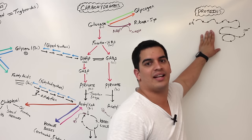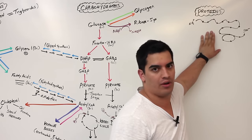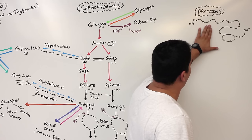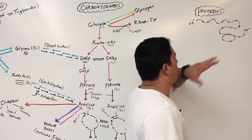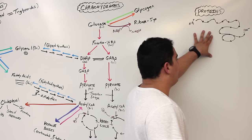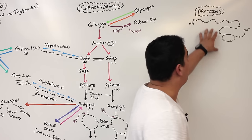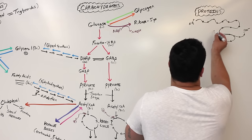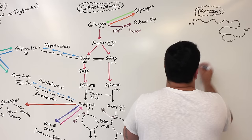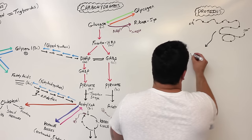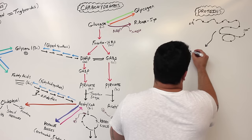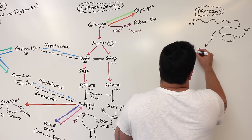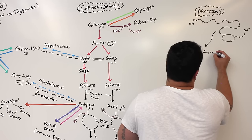Protein breakdown can also happen with excessive long-term stress, like due to elevated levels of cortisol. So let's say I take these proteins and for whatever reason — whether it be severe stress, very low carbohydrate intake, or prolonged starvation — I break them down into their individual units. What do we call breaking down proteins into those individual small units? They are called amino acids.